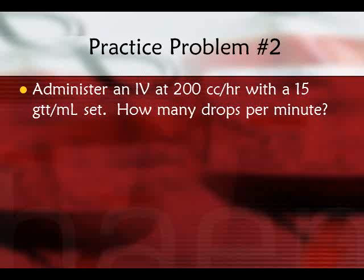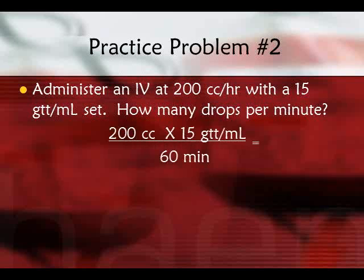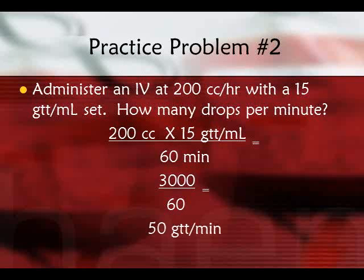Practice problem two: administer an IV at 200 cc's per hour with a 15-drop per mL set — how many drops per minute? Set it up as 200 cc's times 15 drops per mL divided by 60 minutes. That equals 3000 over 60, or 50 drops per minute.